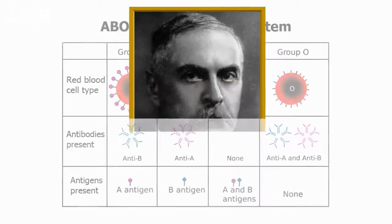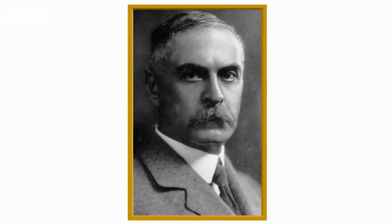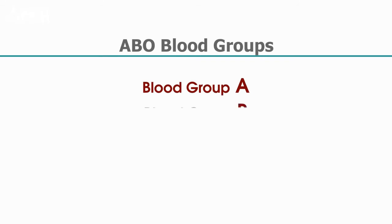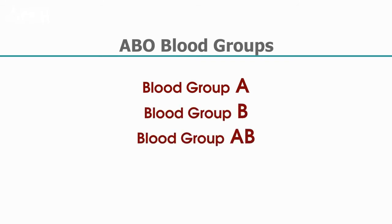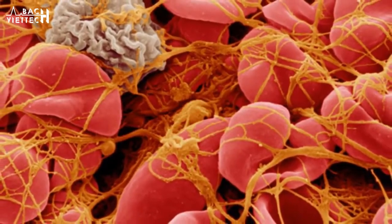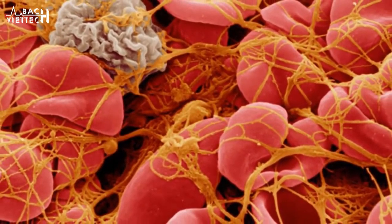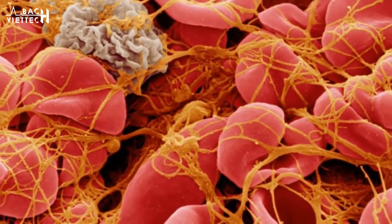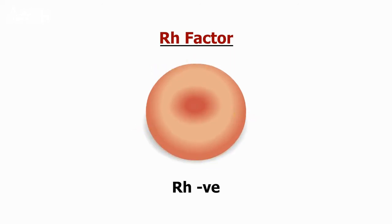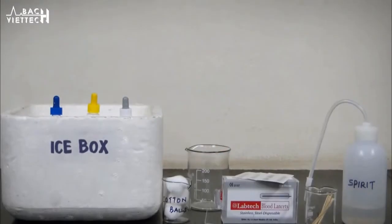According to the ABO blood grouping system discovered by Karl Landsteiner, there are four types of blood groups: blood group A, blood group B, blood group AB, and blood group O. The Rh or Rhesus factor is found on the RBC surface in most people, like A and B. This is also an antigen, and those who have this antigen are called Rh positive, while those who lack this antigen on the surface of RBCs are called Rh negative.